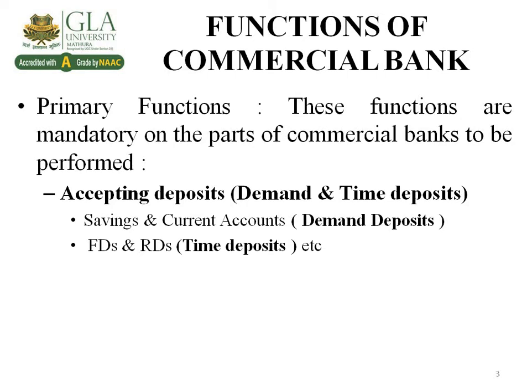Fixed deposits (FDs) and recurring deposits (RDs) are known as time deposits because they have a fixed duration. For FDs, the time period ranges from 7 days to 10 years. For RDs, the minimum time period is 6 months and the maximum is 10 years. Other accounts like NRE, NRO, FCNR, no-frills accounts, and BSDA also come under the category of acceptance of deposits.